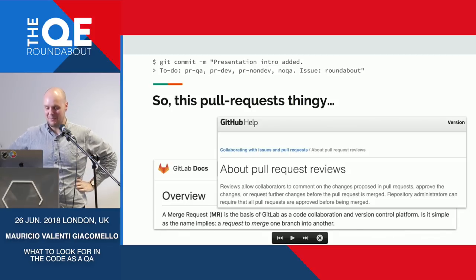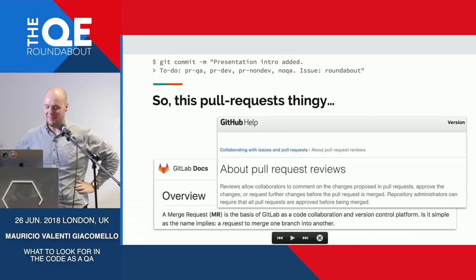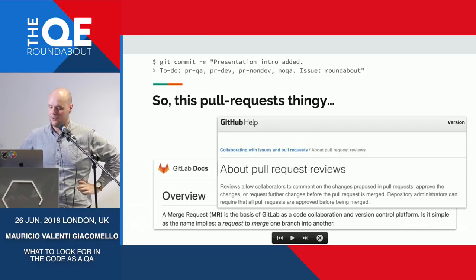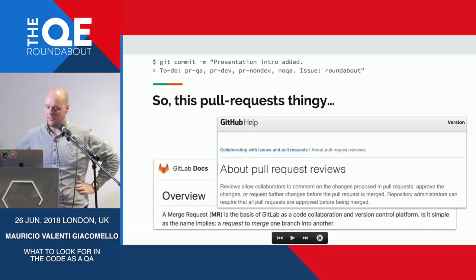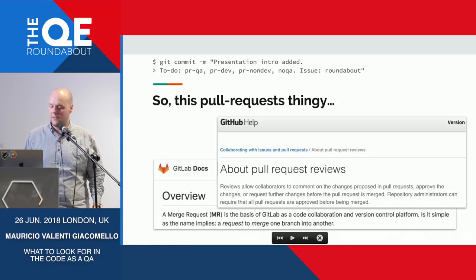Pull requests. Based on GitHub, pull request reviews allow collaborators to comment on changes proposed in the pull request, approve the changes, or request further changes before the pull request is merged. Repository administrators can require that all pull requests are approved before merging.